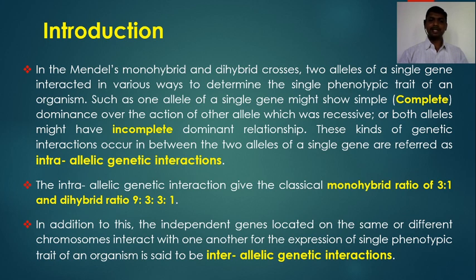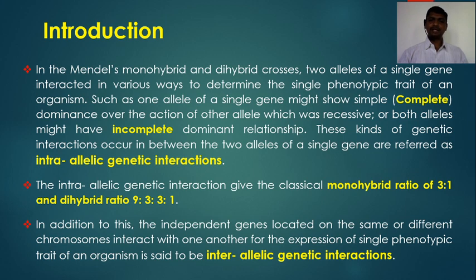In this chapter we are going to study inter-allelic genetic interactions, which take place between independent genes located on the same or different chromosomes that interact for the expression of a single phenotypic trait. This contrasts with intra-allelic interactions, which take place between the two alleles of a single gene showing complete or incomplete dominance.